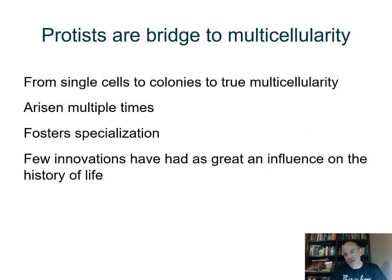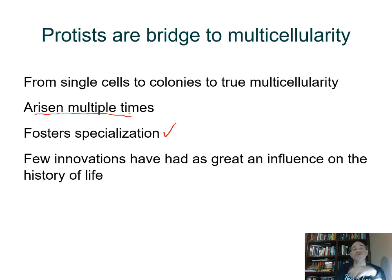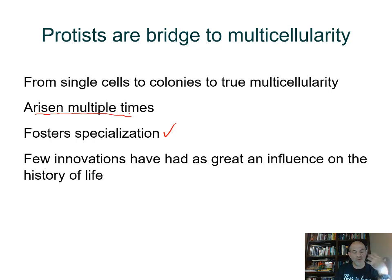Protists show multicellularity that evolved in several lines of organisms. The significance of multicellularity is that it allows for specialization within the body of the organism — you divide labor to cells that specialize to benefit the overall multicellular organism. This multicellularity arose multiple times in the evolutionary history of different groups of eukaryotes, opening new lines of evolution.